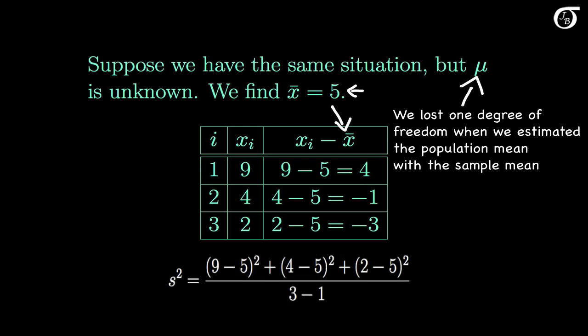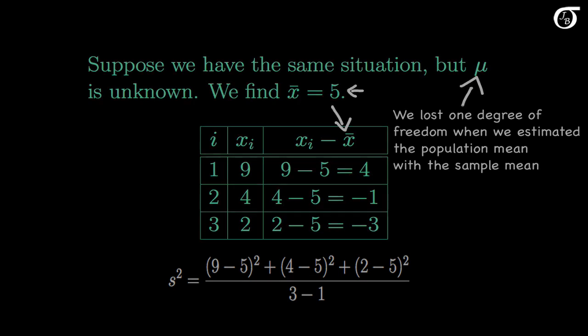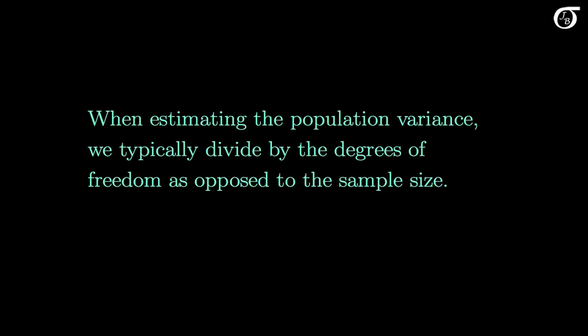To calculate the sample variance, we take the sum of the squared deviations and we divide by the degrees of freedom, which is 3-1. When estimating the population variance, we typically divide by the degrees of freedom as opposed to the sample size, as this results in a better estimator. And as I said earlier, in another video I show mathematically that dividing by n-1 results in an unbiased estimator of the population variance.